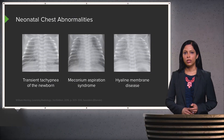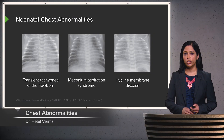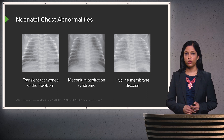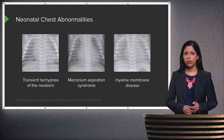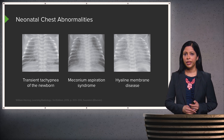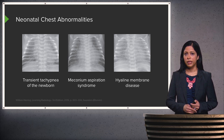In this lecture, I'd like to review some commonly encountered chest abnormalities within the neonatal and pediatric population. These can differ significantly from adult chest disease. We'll start off with the neonatal period. The three most commonly encountered abnormalities in the neonatal period include transient tachypnea of the newborn, meconium aspiration syndrome, and hyaline membrane disease.